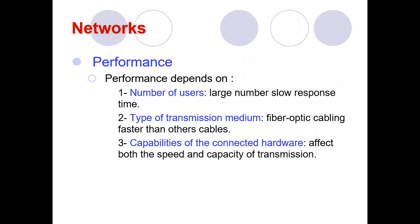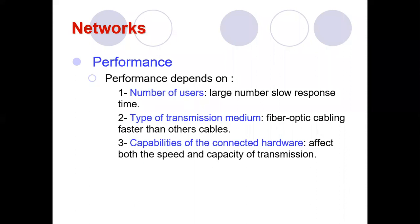Like when checking exam results, if only 50 students check simultaneously they get results quickly, but as more students check, response time slows. The type of transmission medium also matters — coaxial cables or LAN cables have less transmission capacity, whereas fiber optic cabling has much higher transmission capacity.